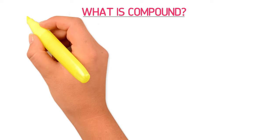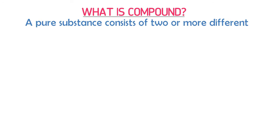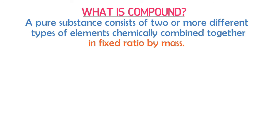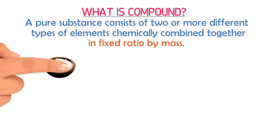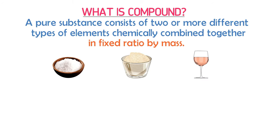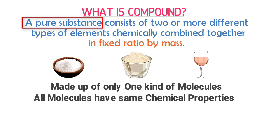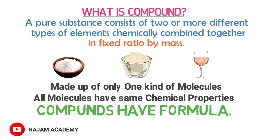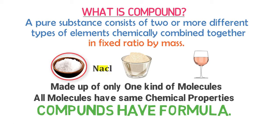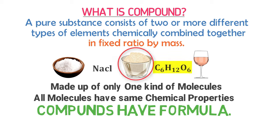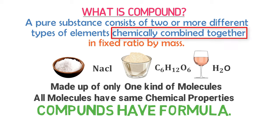Now, what is a compound? A compound is a pure substance that consists of two or more different types of elements chemically combined together in a fixed ratio by mass. For example, table salt, sugar, and water. Remember that a compound is also a pure substance because it is made up of only one kind of molecule, and all these molecules have the same chemical properties. Compounds are represented by their respective formula — for example, table salt is NaCl, glucose sugar is C6H12O6, and water is H2O.